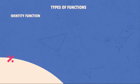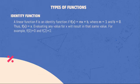Identity function: A linear function f is an identity function if f(x) = mx + b, where m = 1 and b = 0. Thus, f(x) = x. Evaluating any value for x will result in itself, that is why it is called identity. For example, f(0) = 0, and f(2) = 2.